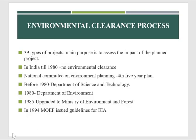The environmental clearance process is required for 39 types of projects, and its main purpose is to assess the impact of the planned project on the environment and people. In India, until 1918 most projects were cleared without any environmental clearance. The National Committee on Environmental Planning was set up in the Fourth Five Year Plan (1969–1978). Before 1980, all issues related to environmental clearance were dealt with by the Department of Science and Technology. In 1980, the Department of Environment was set up, upgraded to the Ministry of Environment and Forests (MOEF) in 1985, and in 1994 MOEF issued guidelines for EIA.